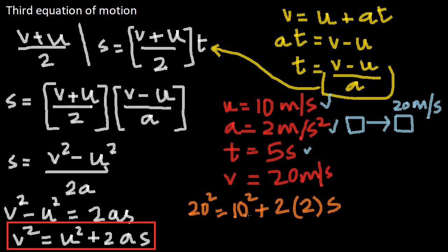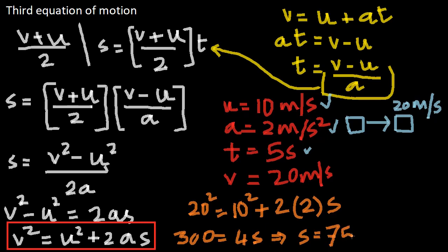So 20 squared becomes 400, and 10 squared becomes 100. Taking 100 to the other side gives 400 minus 100, which is 300, equal to 4s. Therefore s is equal to 300 divided by 4, which is 75 meters. The object travels 75 meters, and we have successfully calculated the displacement using the third equation of motion. Now we have all three equations of motion, giving us much more firepower, and we'll come back shortly to look into more interesting concepts regarding motion.